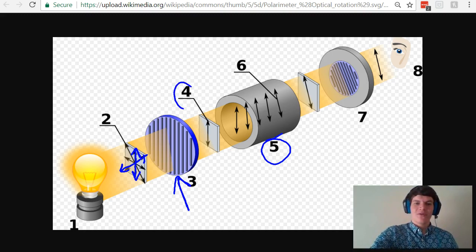Now at point number four, we have what's called plane polarized light. Now this plane polarized light can enter into our polarimeter tube, which contains our chiral compound. As it travels through the solution that contains our chiral compound, notice how it rotates slightly in the counterclockwise direction.